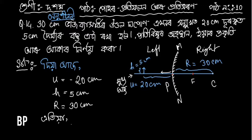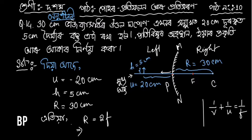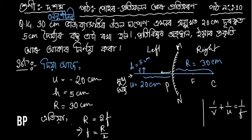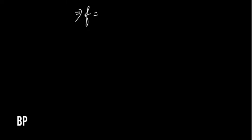We need R. We use the mirror formula: 1 by V plus 1 by U is equal to 1 by F. We know that R is equal to twice F, so 1 by F is equal to R by 2. Therefore, f is equal to 15 cm.